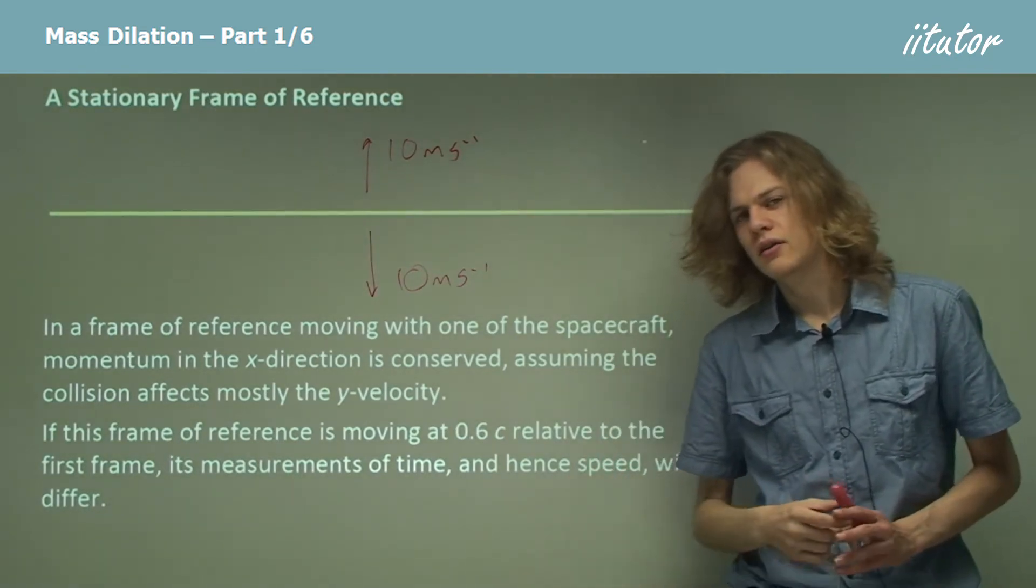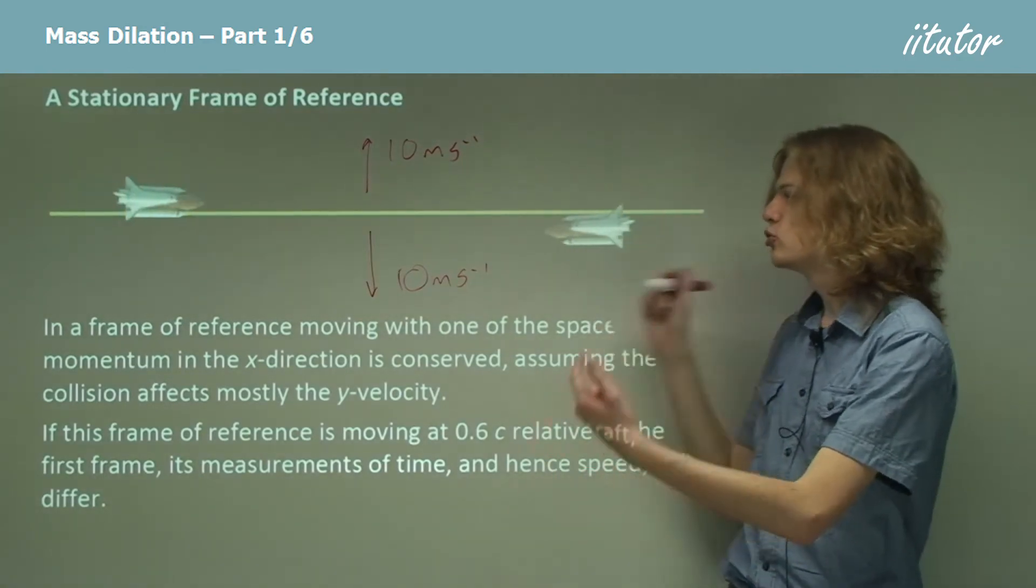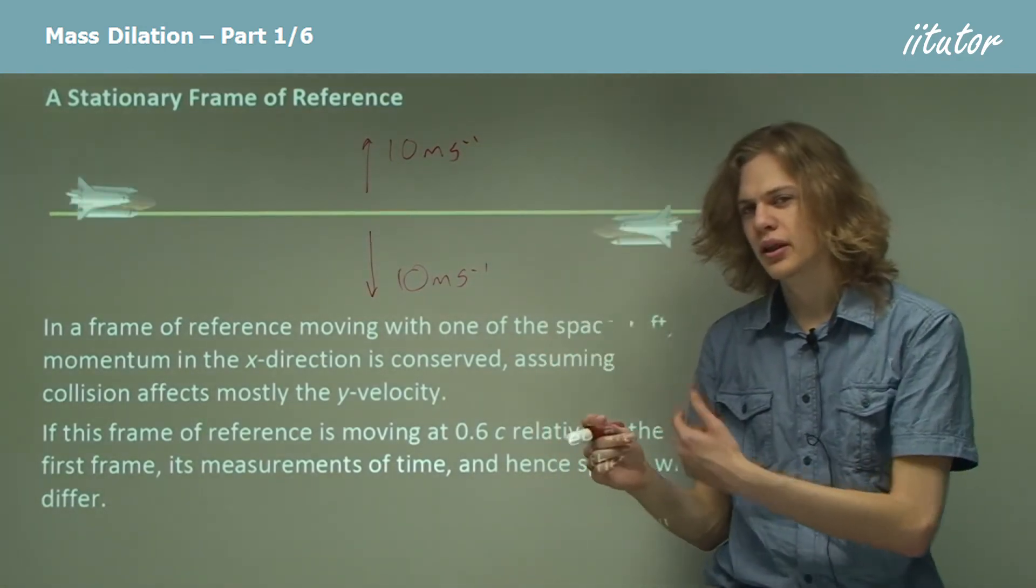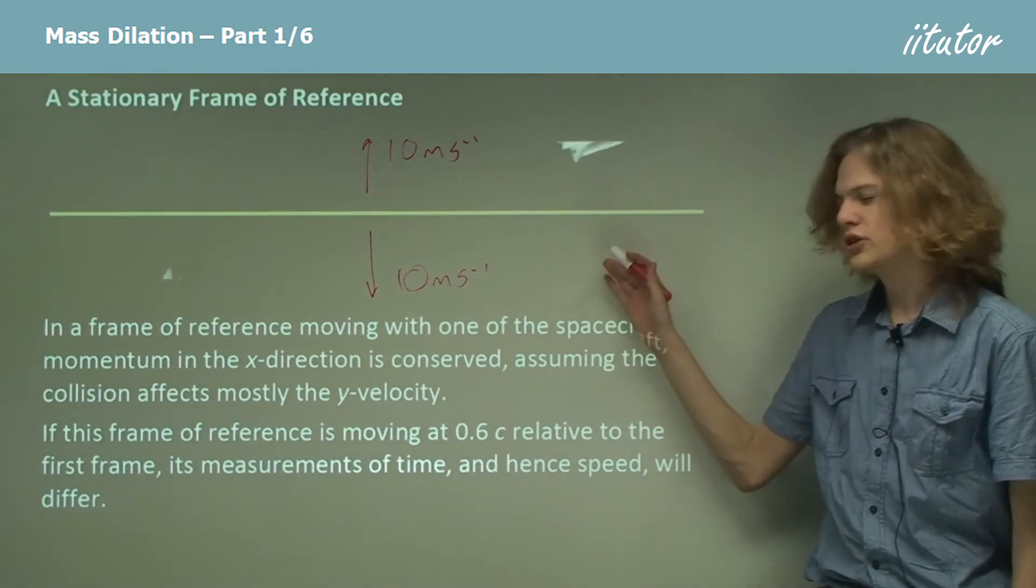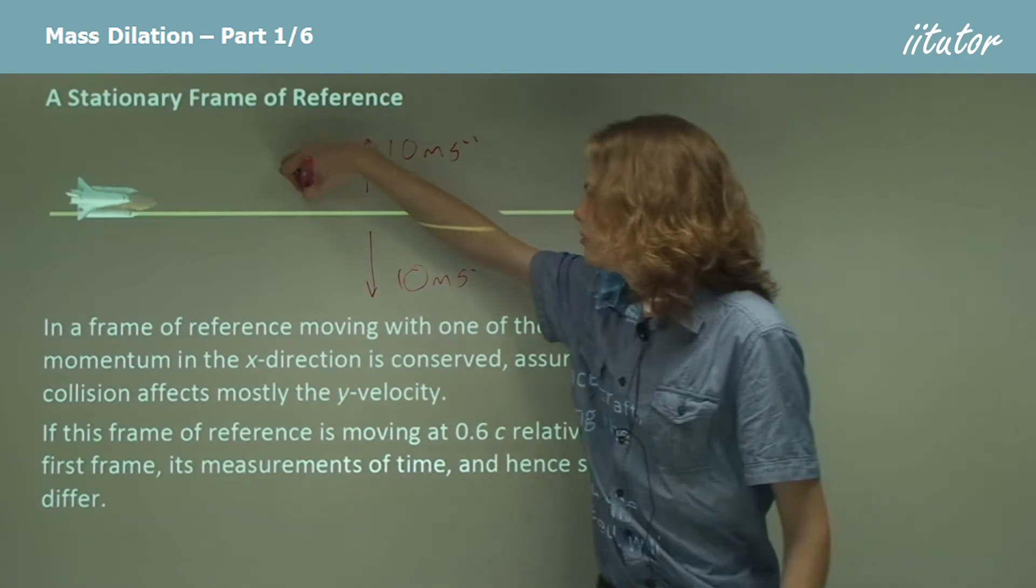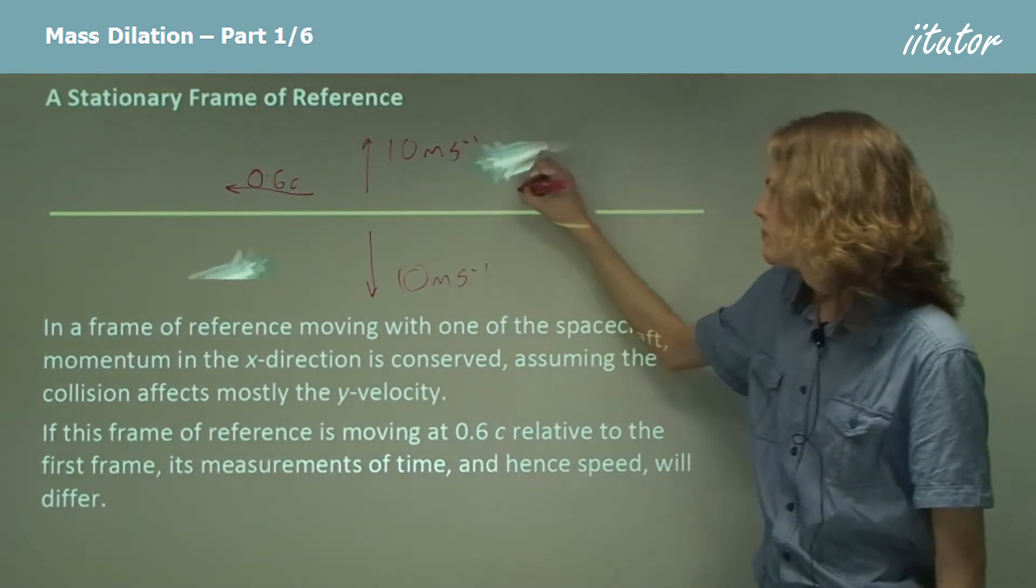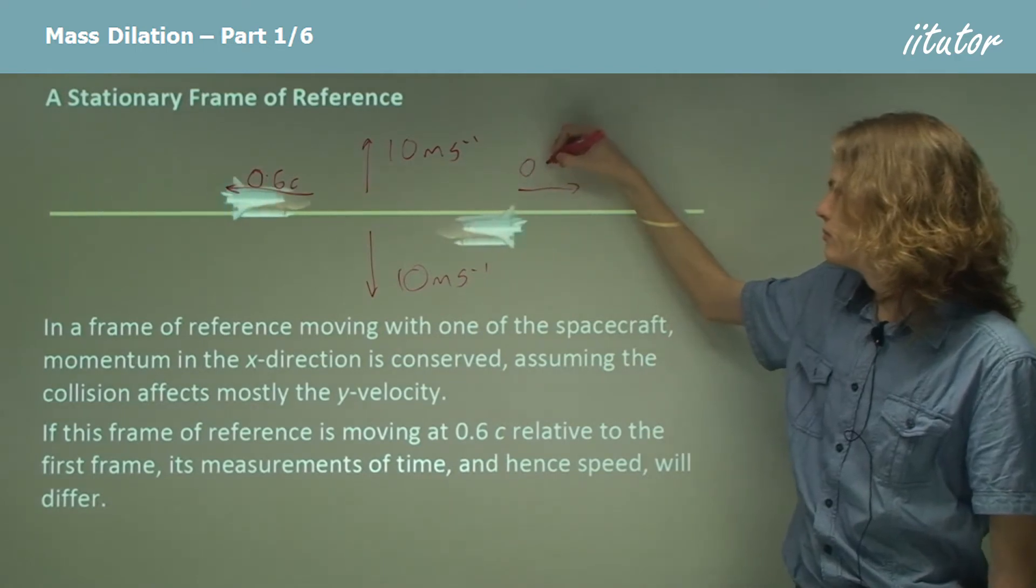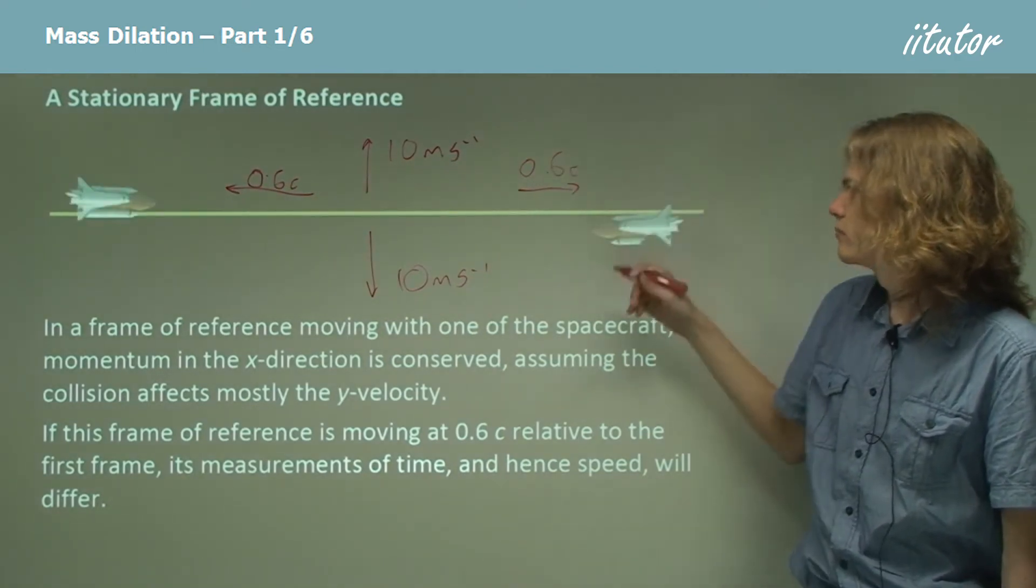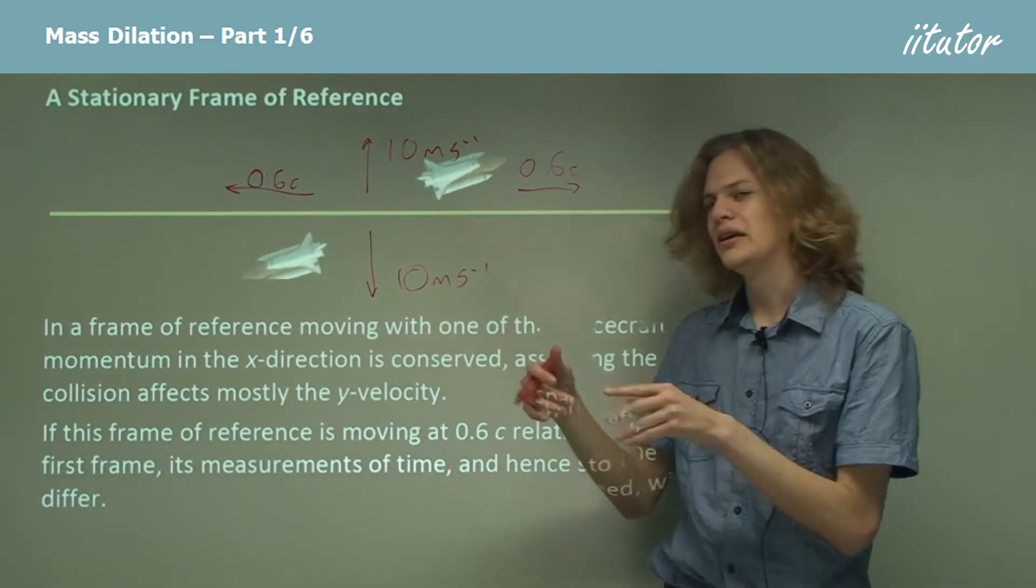Now, let's suppose that instead of looking at it from this point of view, where the ships are moving toward each other at equal speed, we look at it from the point of view of one of the ships. Now this means that we're going to be starting to travel at relativistic speeds, instead of being stationary.